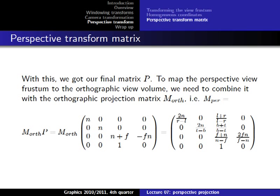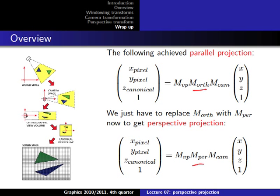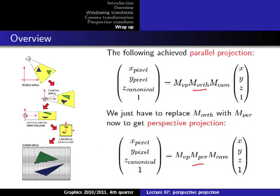So we have our final matrix for the perspective projection. We then combine this with the orthographic projection matrix that we already had, and that gives us the combined matrix. The reason for combining them is so we can directly compare: replacing the parallel projection matrix with this perspective projection matrix makes the formula much more obvious and comparable.